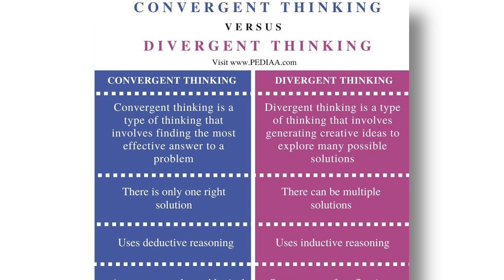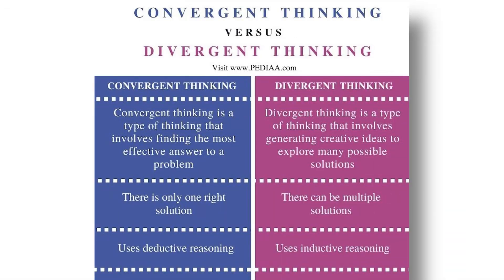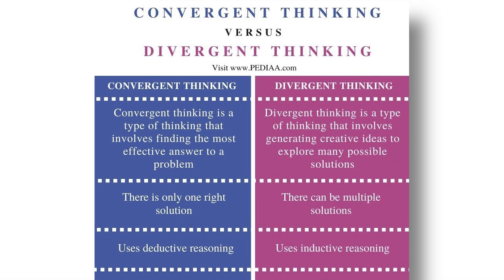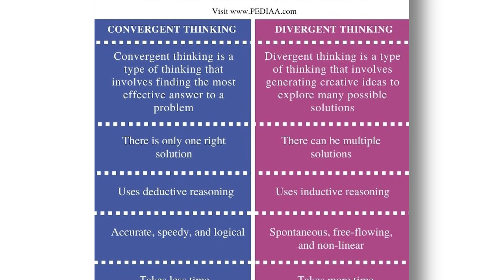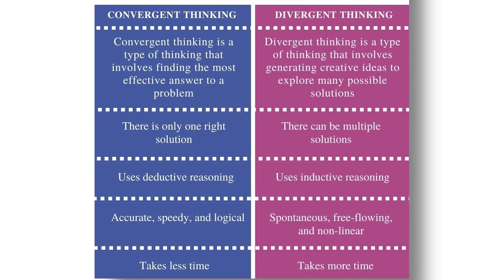In this diagram, there are two types of thinking. Convergent thinking involves finding the most effective answer to a problem — there is only one right solution, it uses deductive reasoning, and produces accurate, speedy, and logical solutions in less time. Divergent thinking generates creative ideas to explore many possible solutions — it is imaginative, uses inductive reasoning, is spontaneous, free-flowing, and non-linear, but takes more time.